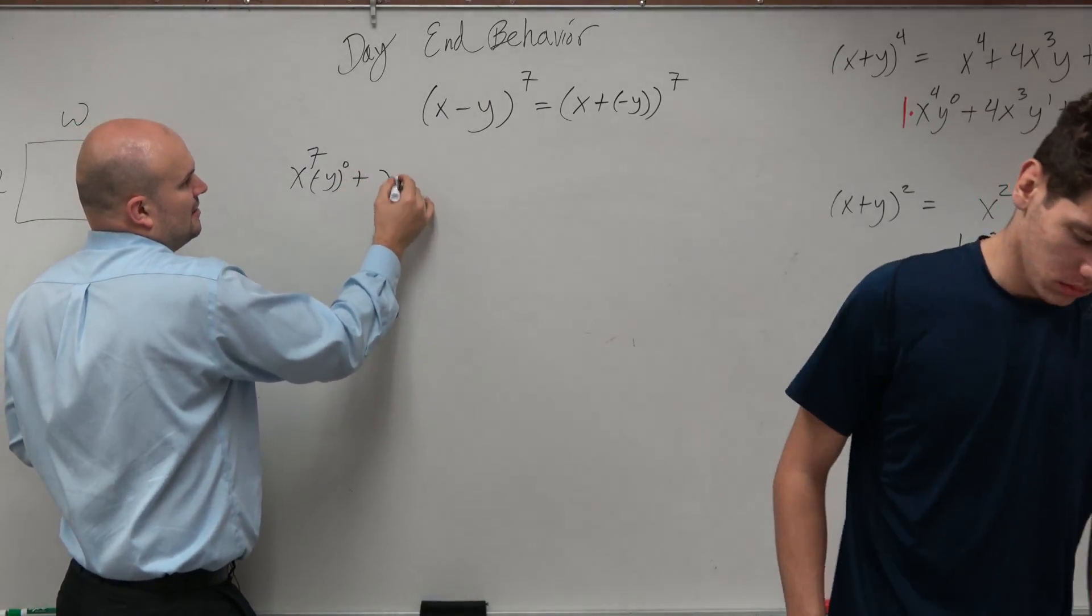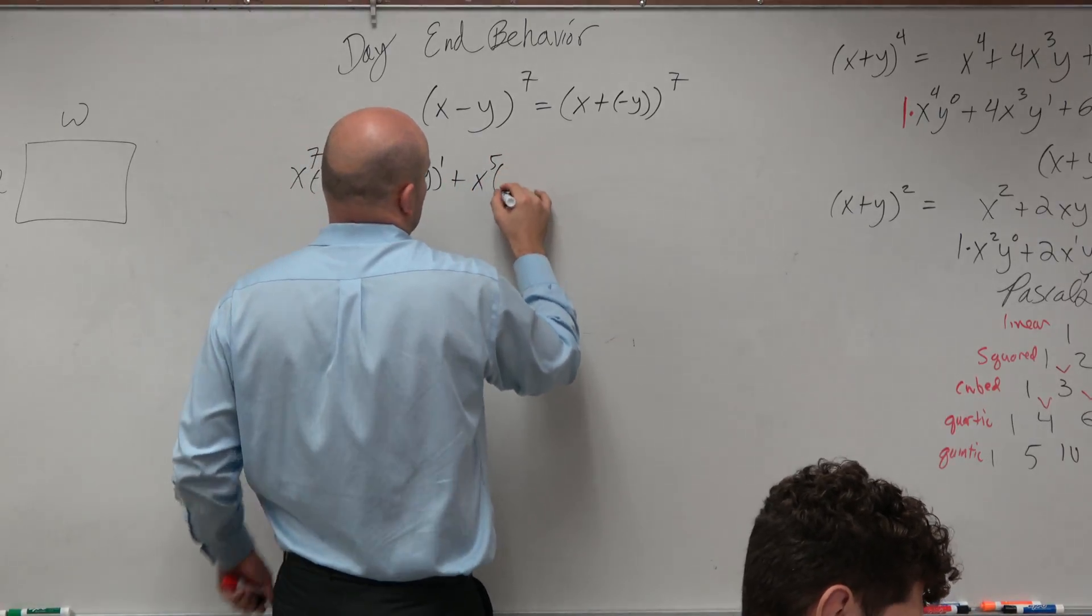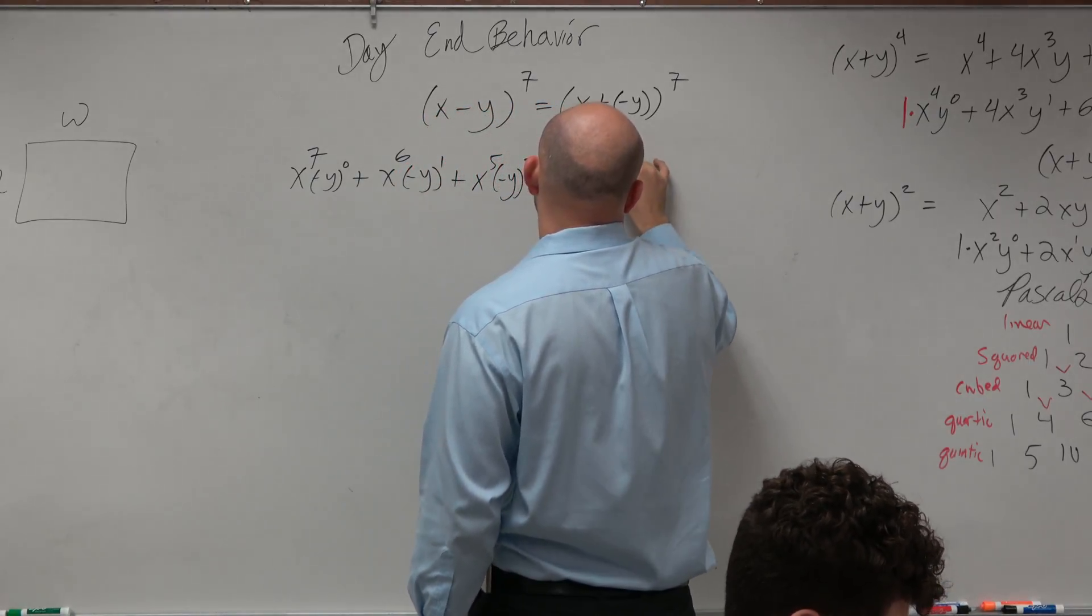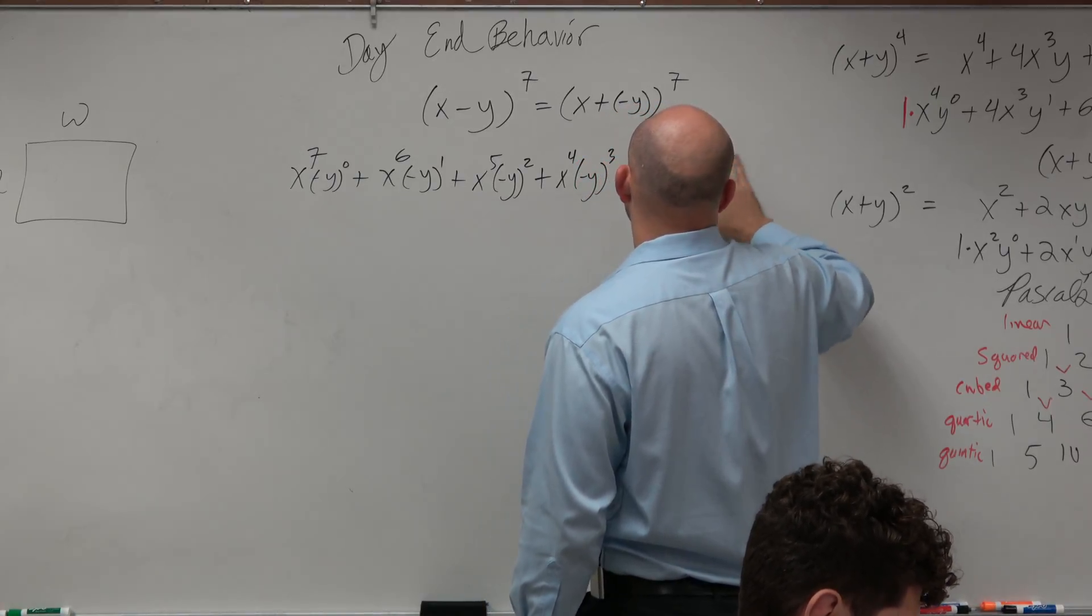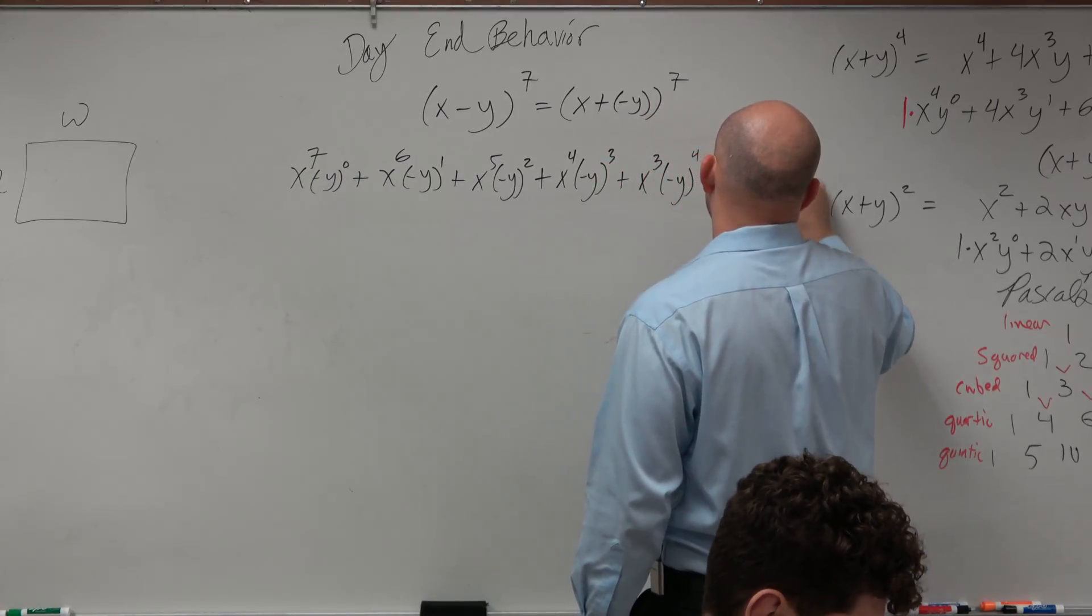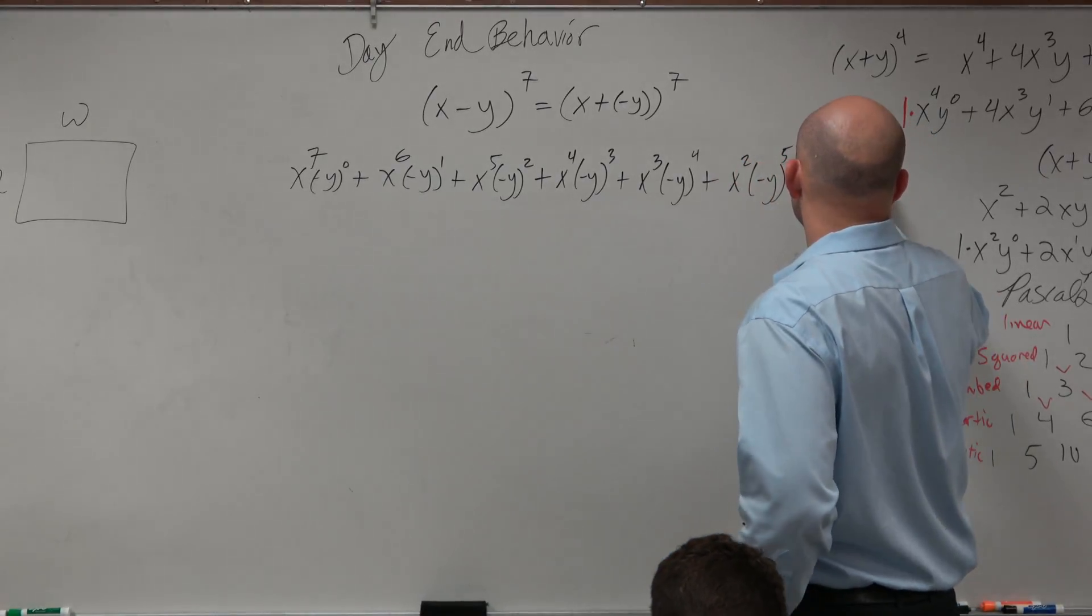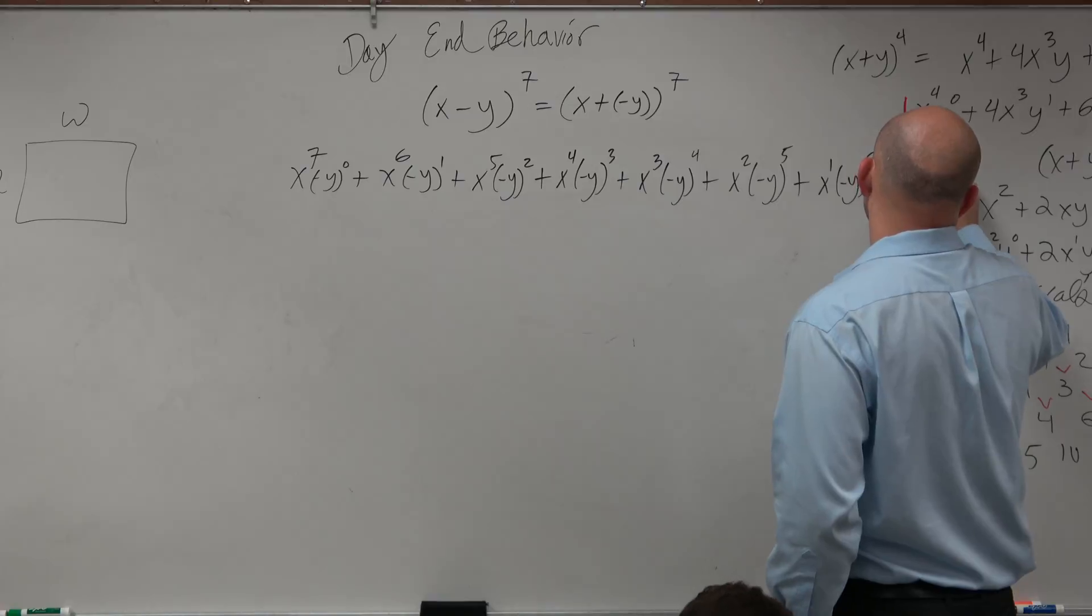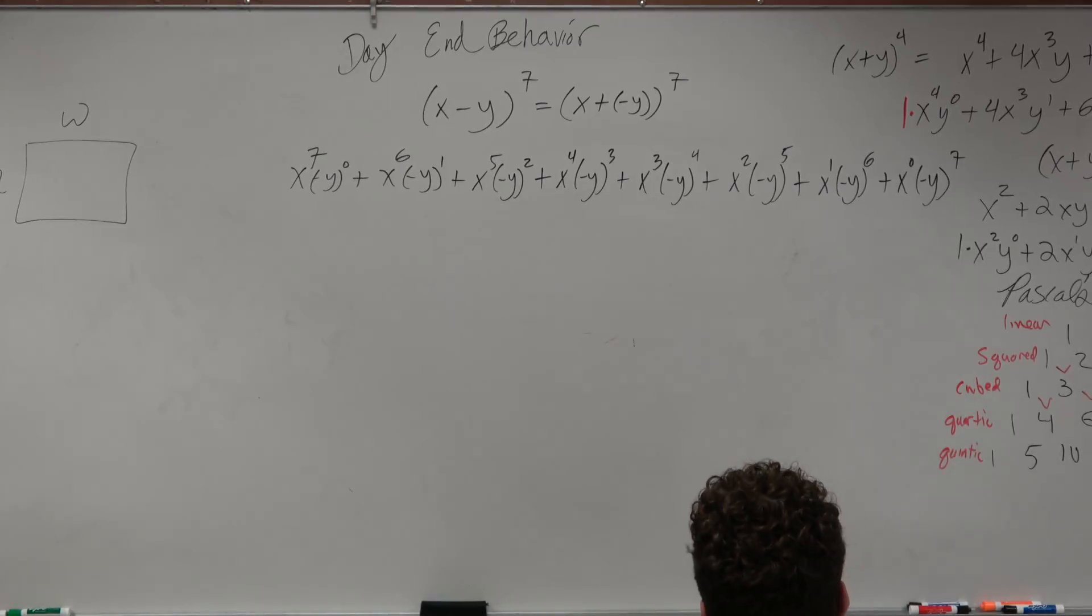So my next term is going to be plus x to the 7th, negative y to the 1st, plus x to the 5th, negative y squared, plus x squared, negative y cubed, plus x to the 4th, negative y squared, or sorry, 4th, plus x squared, negative y to the 5th, I'm running out of space, plus x to the 1st, negative y to the 6th, plus x to the 0, negative y to the 7th. Ran out of space over here, but does anybody see how I did that in my descending powers?